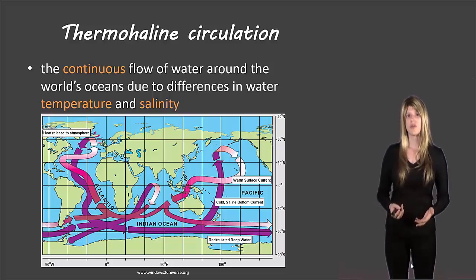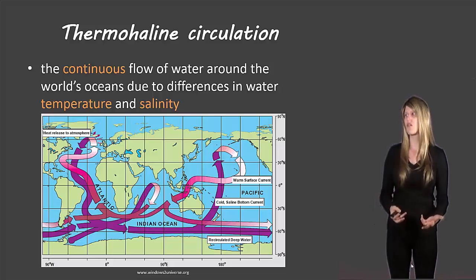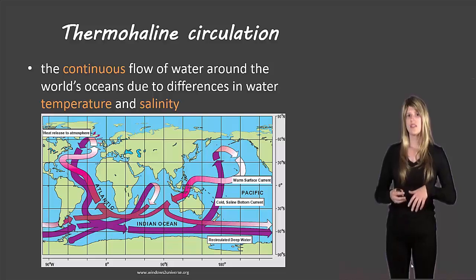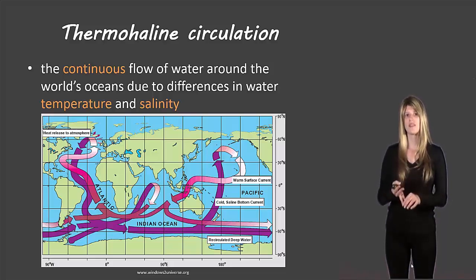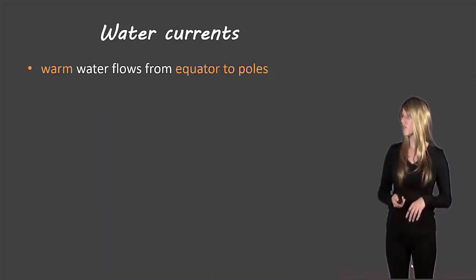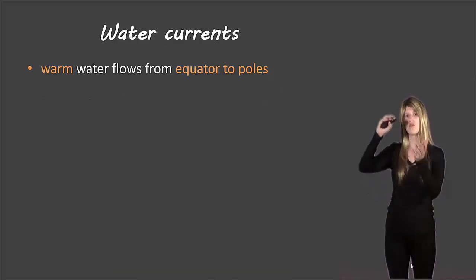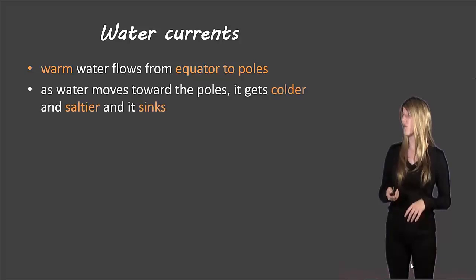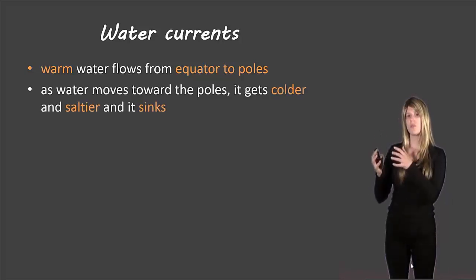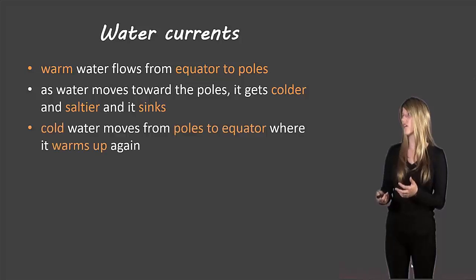And then finally, we get to our thermohaline circulation. So this is with our water. This is this big pattern of water current that goes through the Earth. And it has to do with the temperature of the water and the salinity, which is the saltiness of the water. And that affects how the current moves throughout the Earth. So first of all, warm water flows from the equator towards the poles. As it moves towards the poles, it gets colder and it also gets saltier. And then this will make it sink.